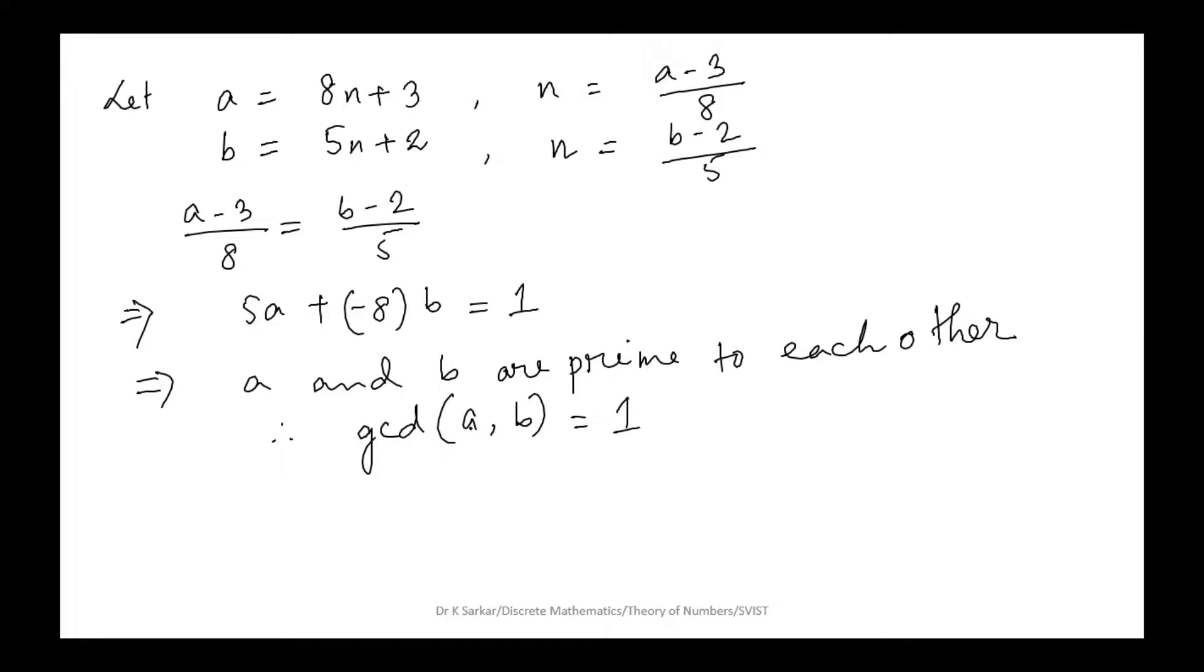Now what is a? 8n+3. What is b? 5n+2. So gcd(8n+3, 5n+2) equals 1. The first part is proved - the integers 8n+3 and 5n+2 are relatively prime.